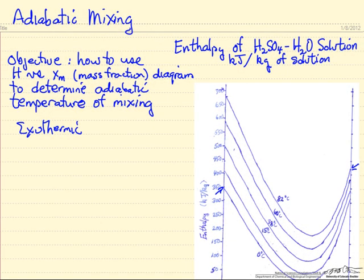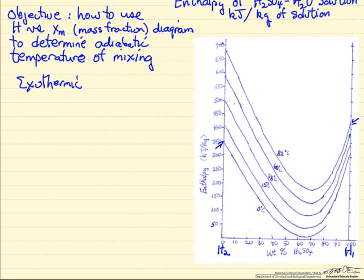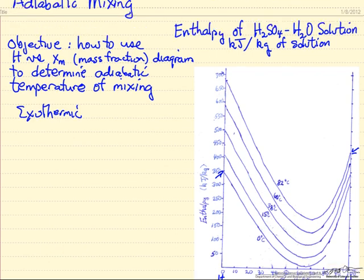We'll look at a diagram of enthalpy versus weight percent. This is for sulfuric acid and water, and the enthalpy is per kilogram of the solution. Our objective is to use this diagram to determine the adiabatic temperature of mixing.